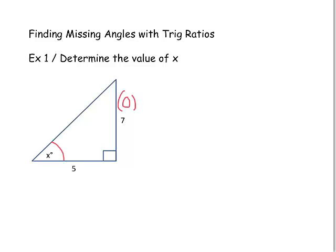We're also given this side length of 5, which is on the leg adjacent to that x-degree angle, so we'll label that with A for adjacent. Now let's remember our three trig ratios: sine, cosine, and tangent.